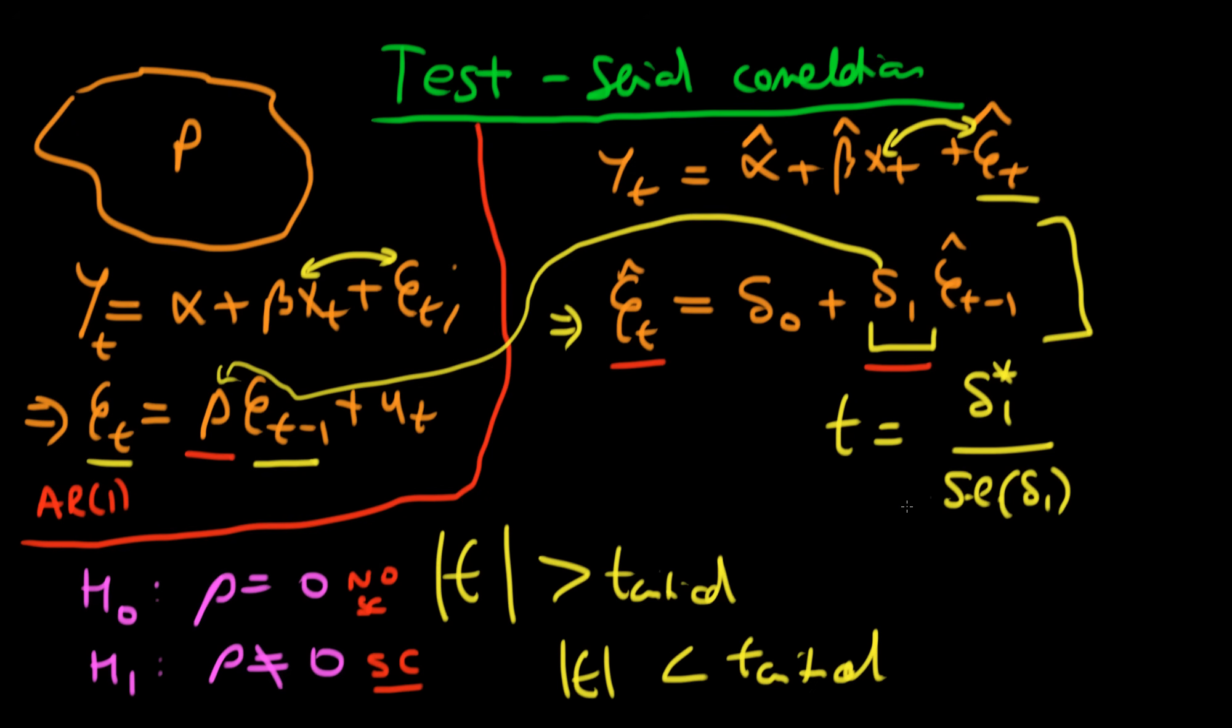Another thing we need to take care of is the fact that we're dividing our estimate of delta one by the standard error of delta one. Normally when you use standard software packages, they assume you have homoscedastic errors. If you have heteroscedastic errors, then you need to correct your t-statistic to take this into account.